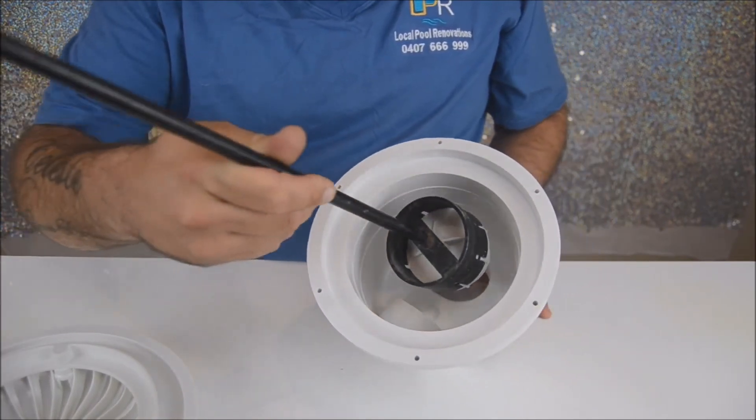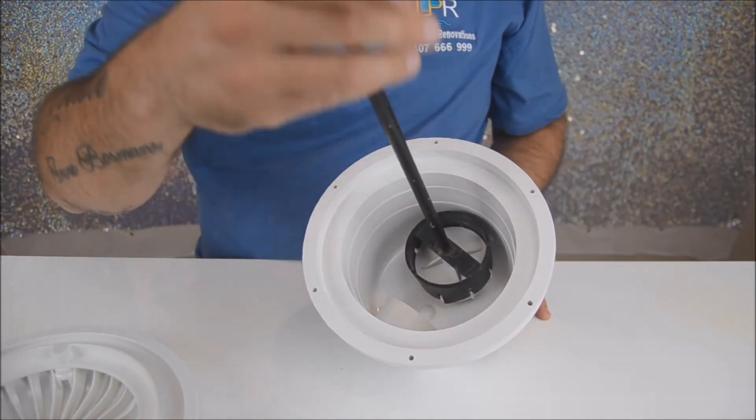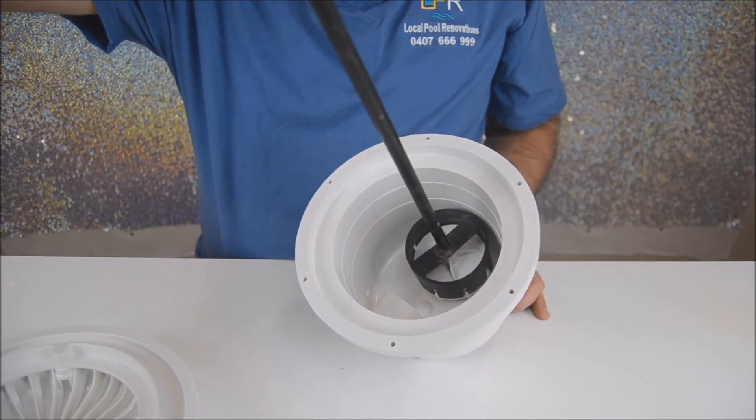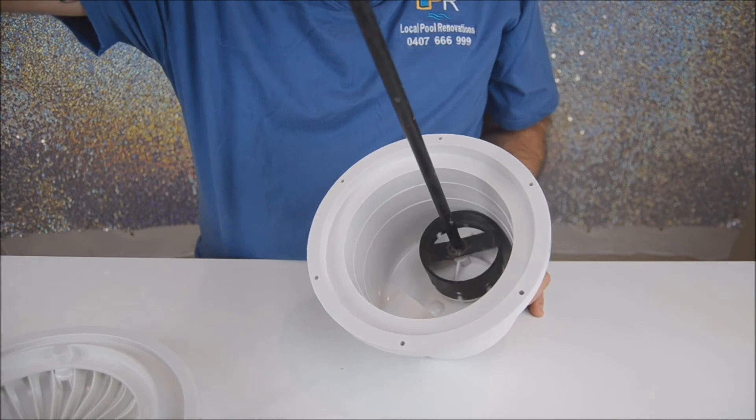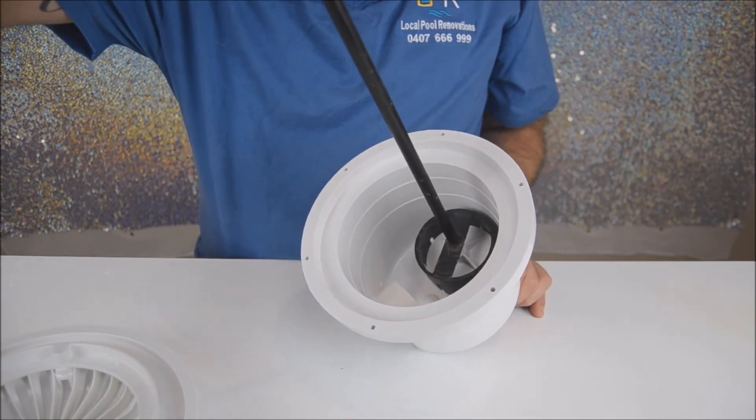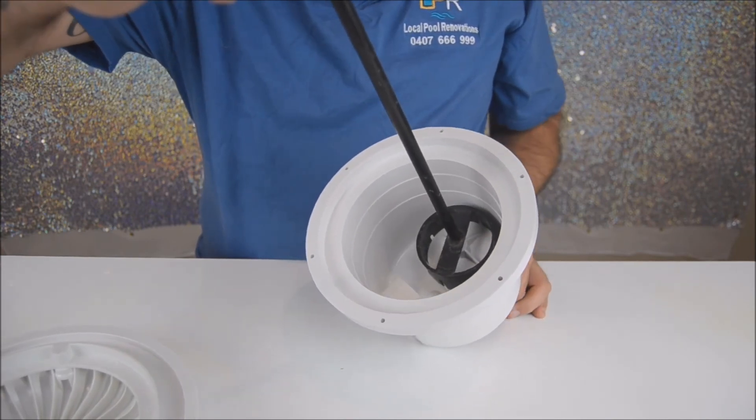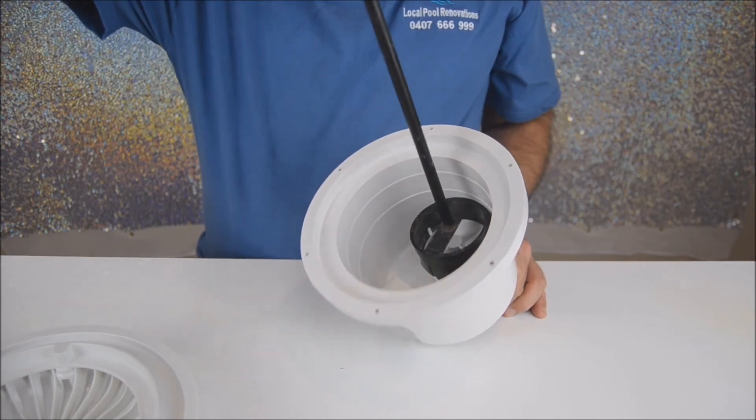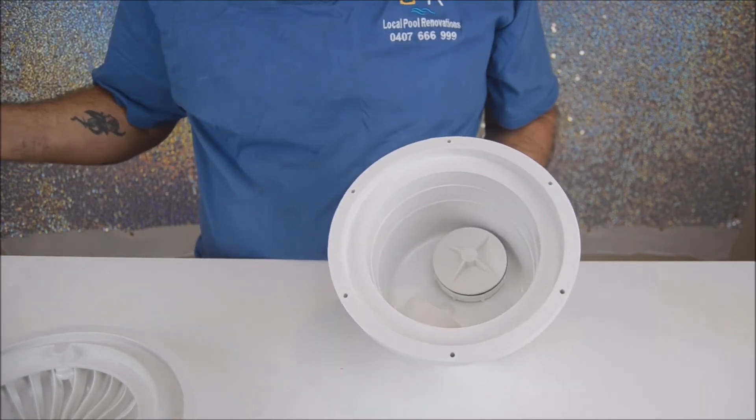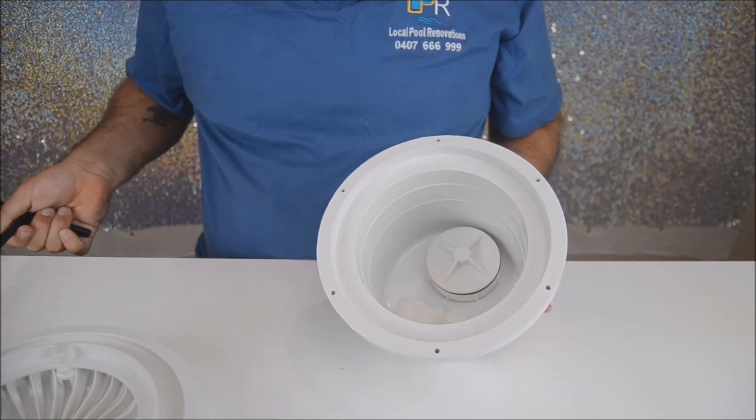You find your valve again, place it in and start to twist it on. Once you find it's tight, you give it a half turn but you don't tighten it any further. You remove the hydrostatic valve removal tool.